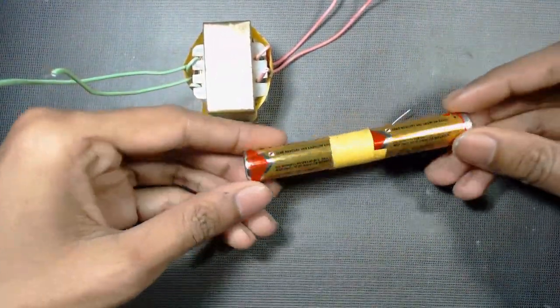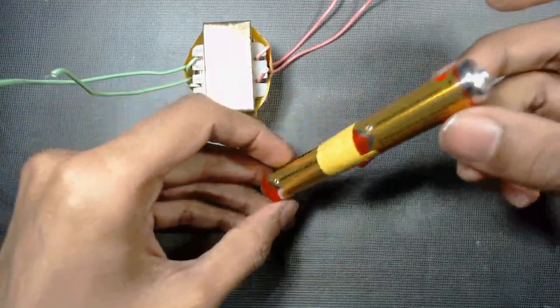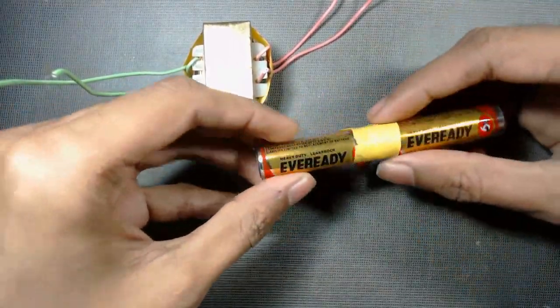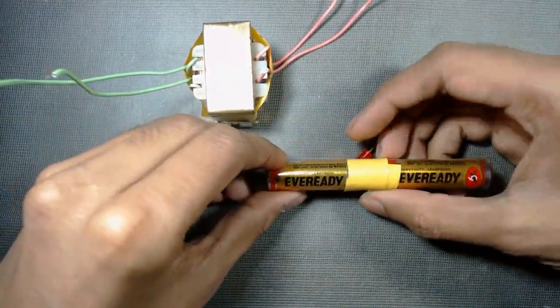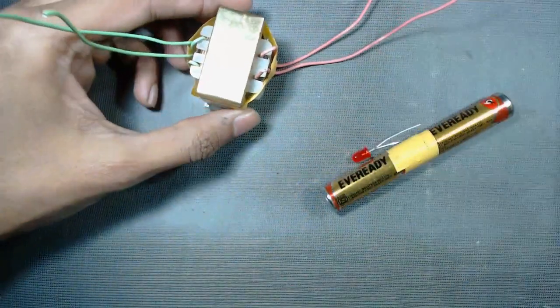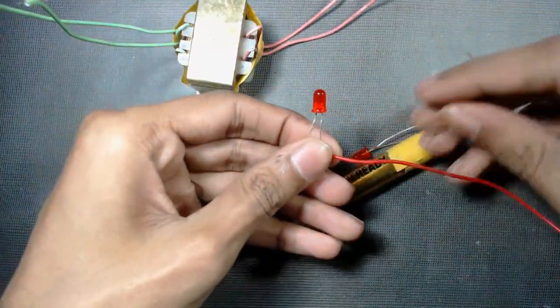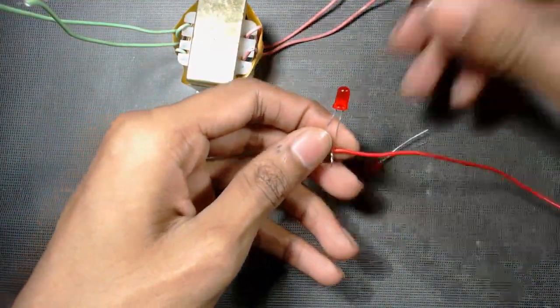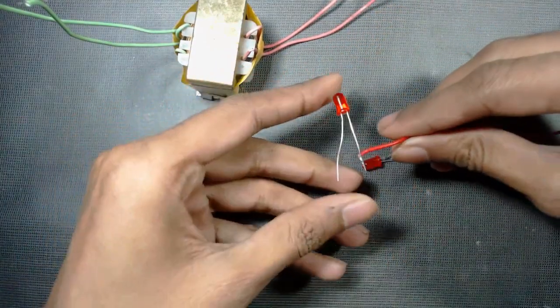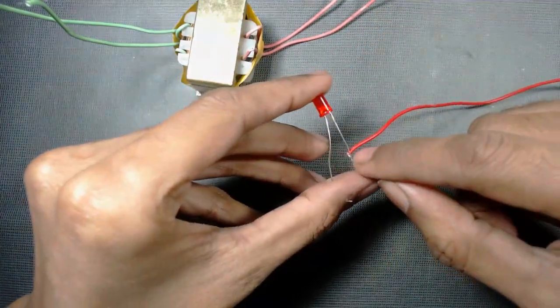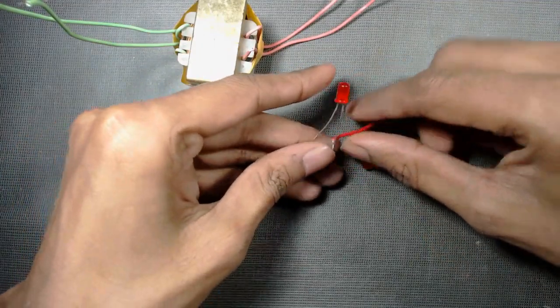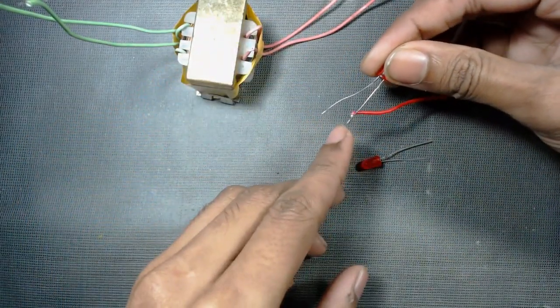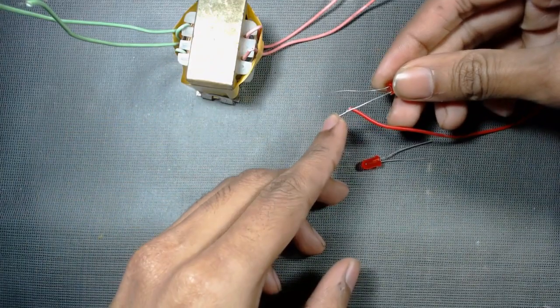I have connected these two batteries in series using yellow tape. Now I am connecting this small 3mm LED with a wire in its negative terminal. The long lead is positive and the short one is the negative terminal.